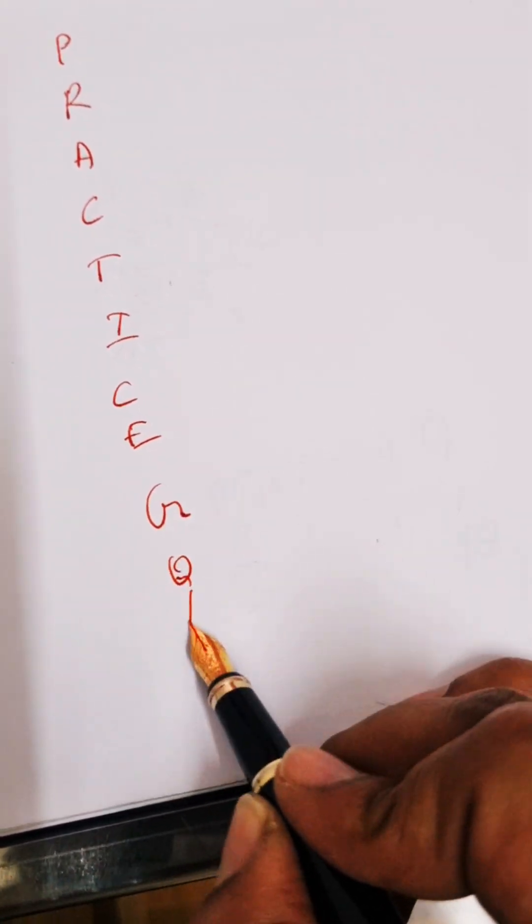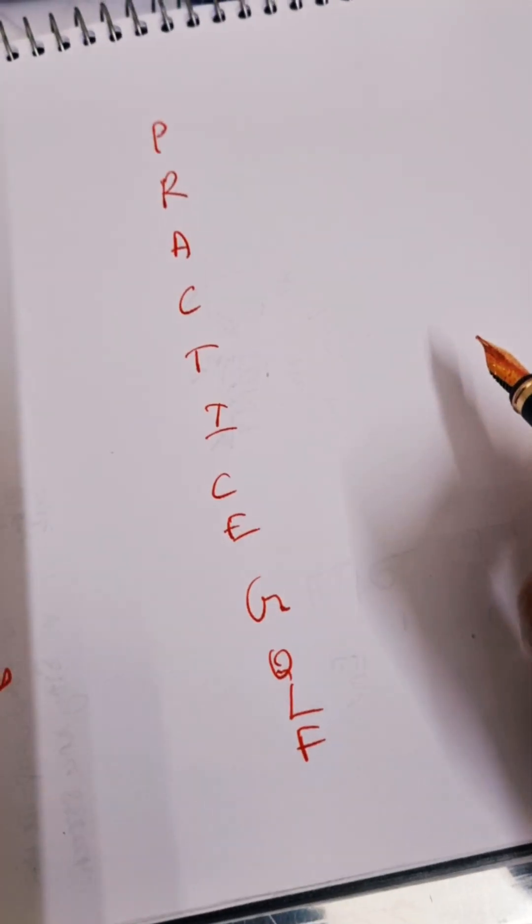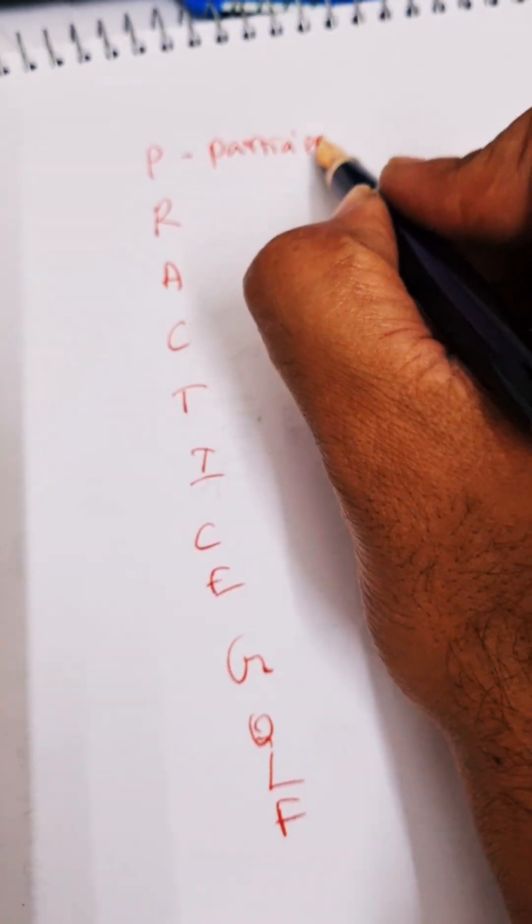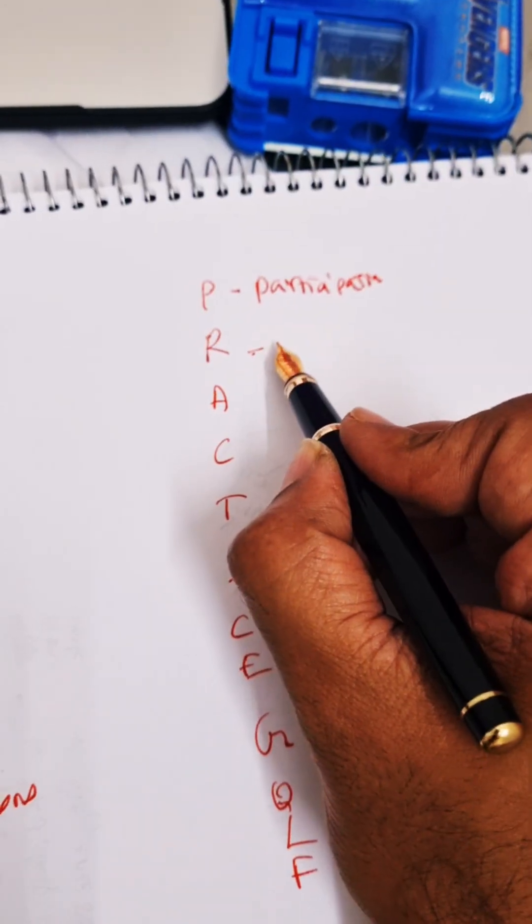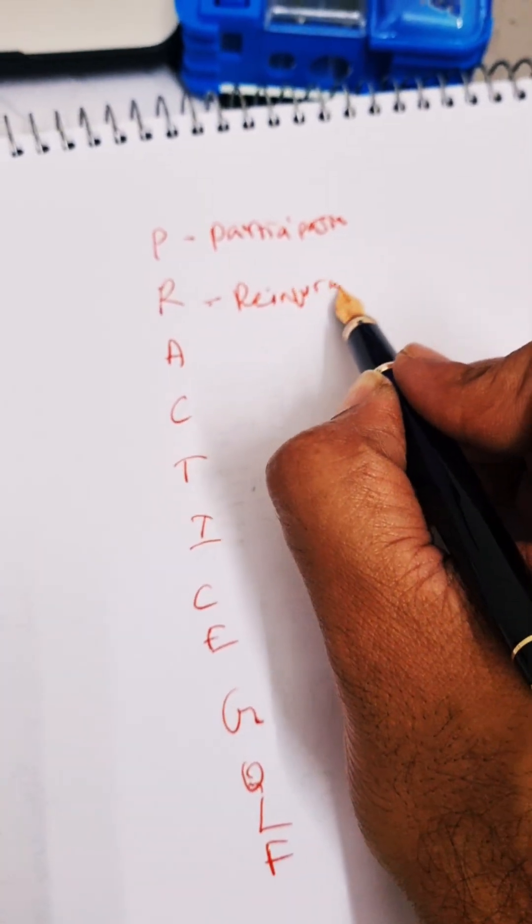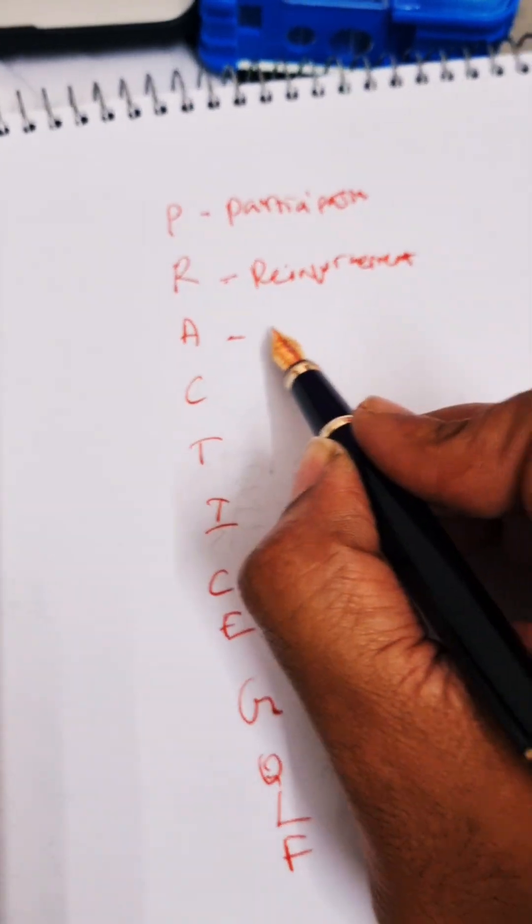P for participation, community participation. R for reinforcement, that is repetition of points. A for actually authenticity.